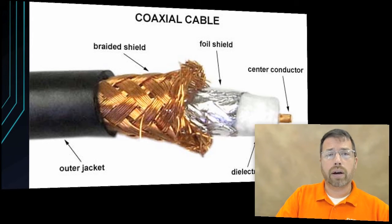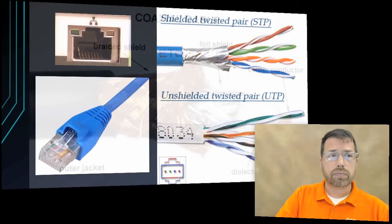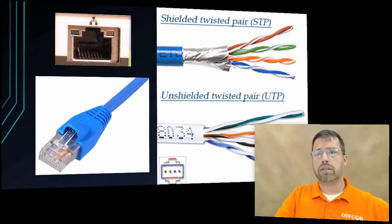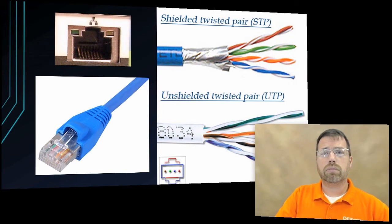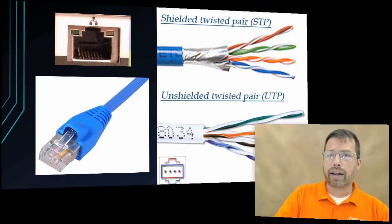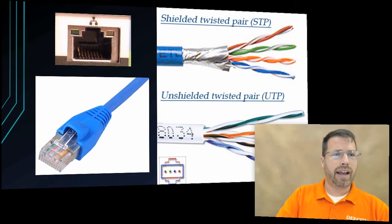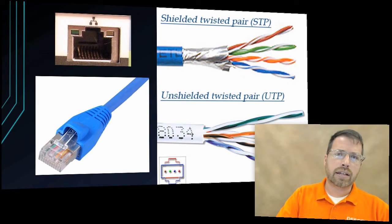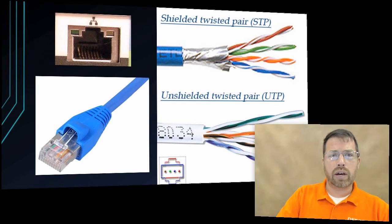The next cable we'll be looking at is a CAT cable. We have different types — you'll hear CAT 3, CAT 4, CAT 5, CAT 6. CAT 5 or CAT 6 are probably the most common that you're going to see in your network in today's world. This is also a twisted pair wire. We can see on the right-hand side of our screen where it says shielded twisted pair, or STP, and unshielded twisted pair, UTP. Be sure you're familiar with those acronyms if you get ready to take some certification exams — you will see those.